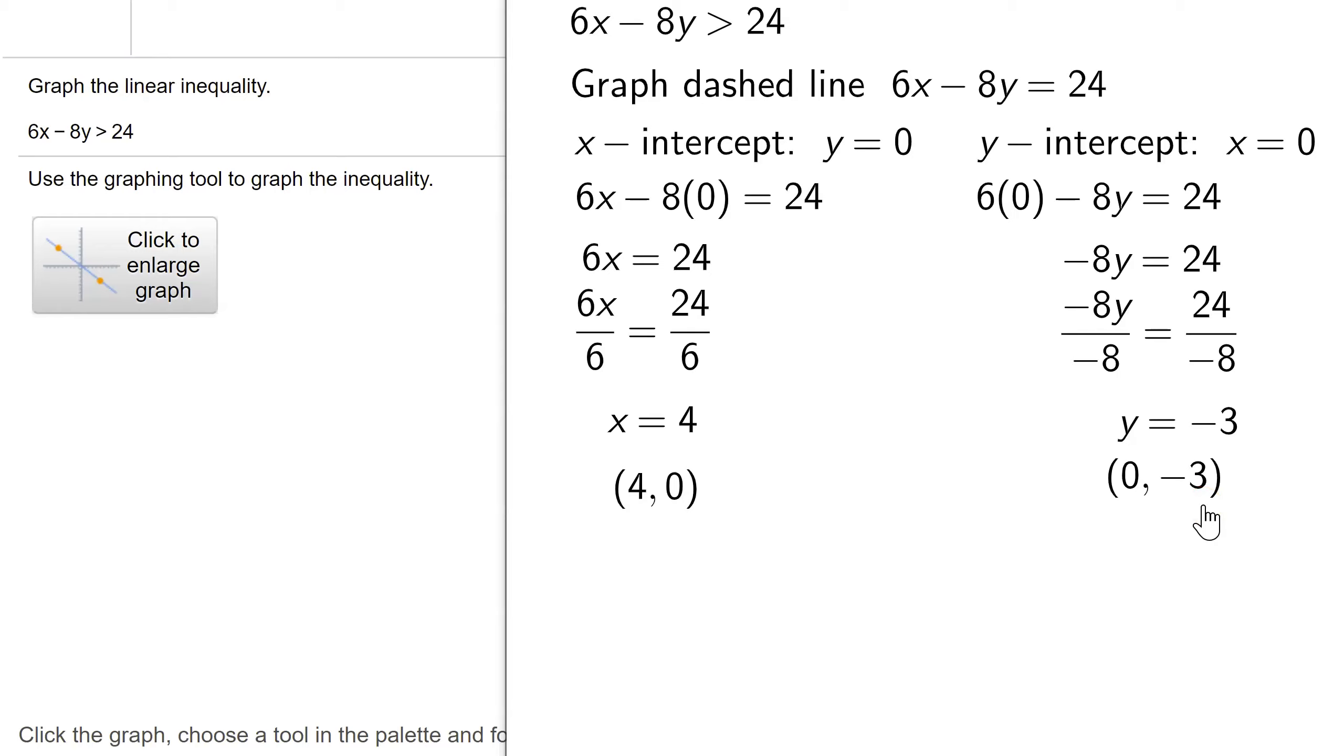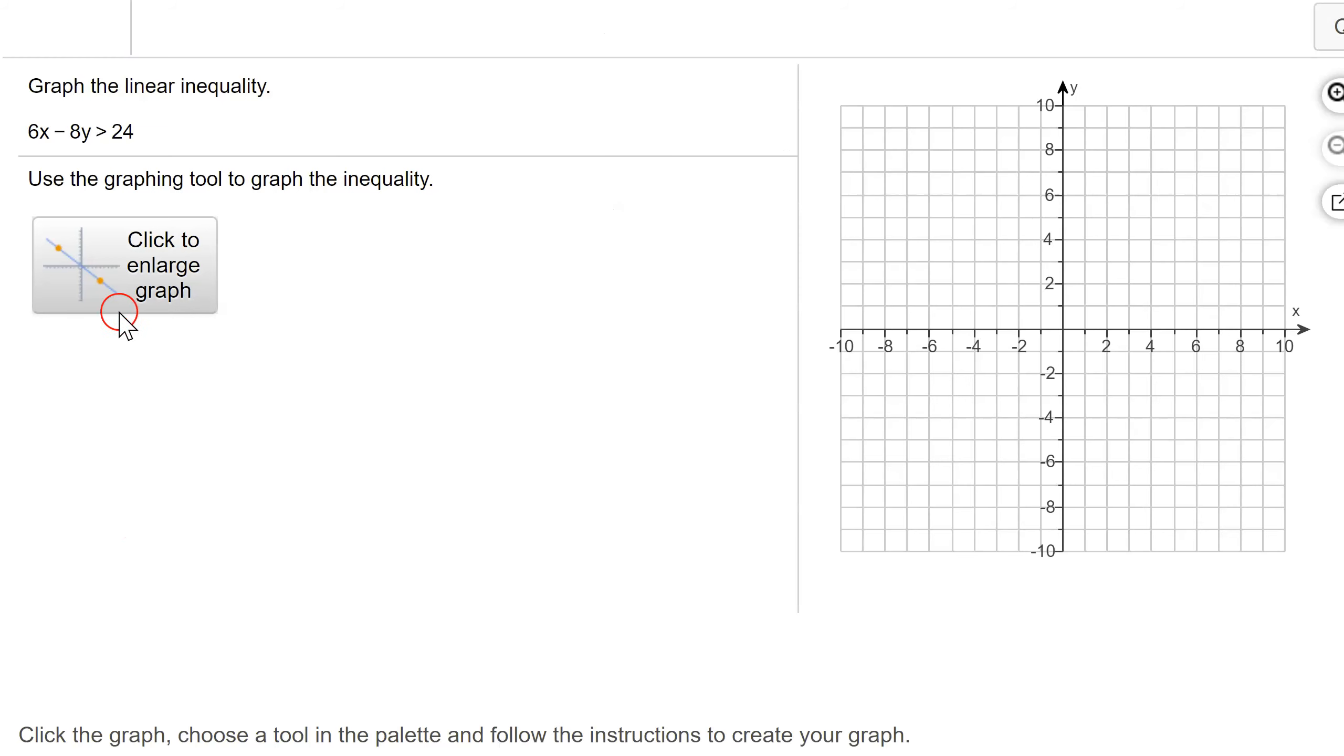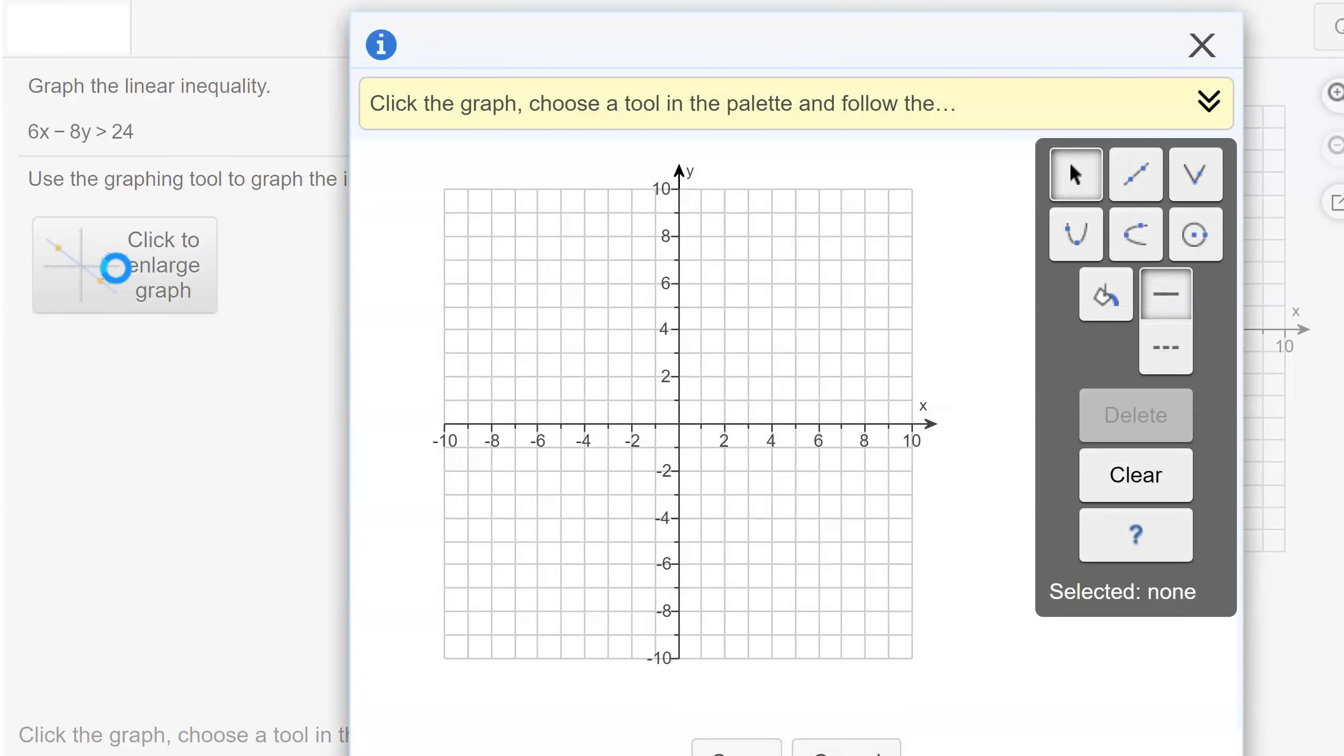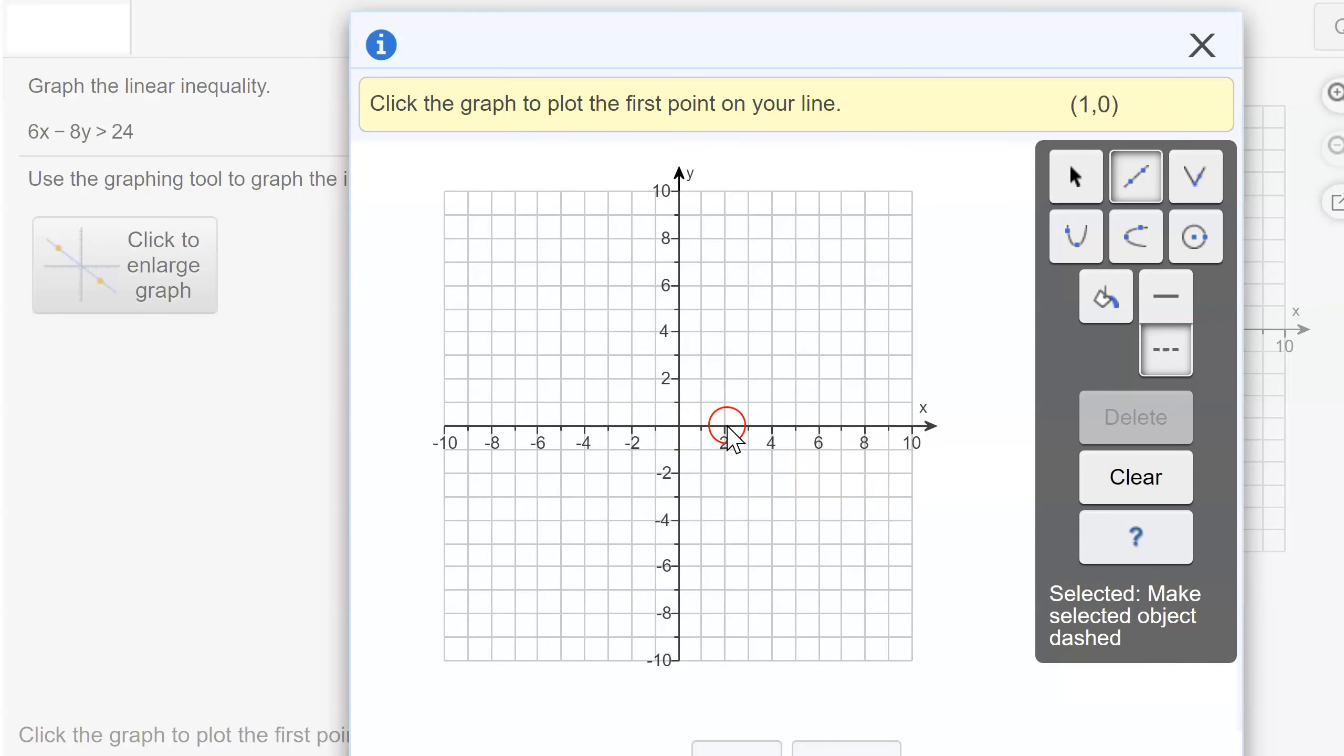So now we need to graph our dashed line. Let me go to MathLab. I'm going to click to enlarge the graph. Here's my line graphing tool, but we have to pick the dashed line here. My x-intercept was (4, 0). When I'm moving the cursor around, look up here and you'll see the coordinates of the point I'm hovering over. So I start at the origin and go to (4, 0).